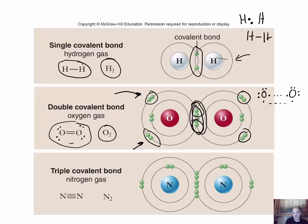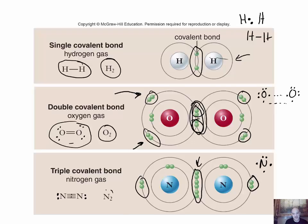Nitrogen by itself has five valence electrons with three unpaired, so it can form three covalent bonds with another nitrogen atom, resulting in a triple covalent bond with six valence electrons being shared. Each nitrogen gets six shared electrons plus its lone pair, giving eight total — satisfying the octet rule for both atoms. The structural formula shows three dashes representing the triple bond, and the lone pair of electrons on each nitrogen. The molecular formula is N2.